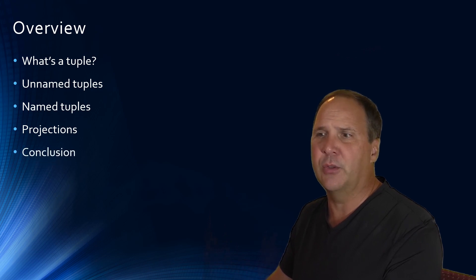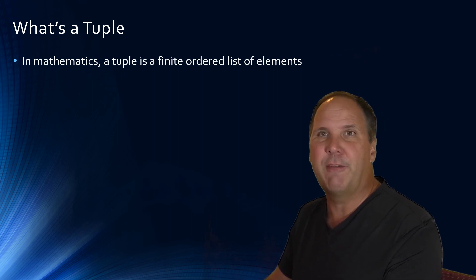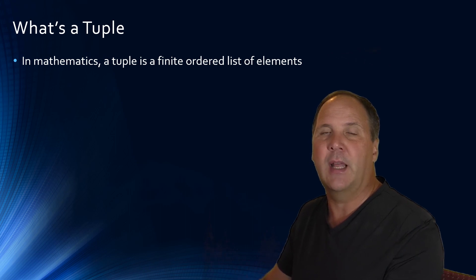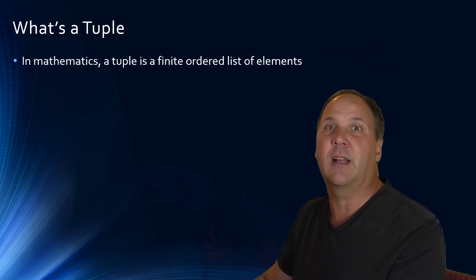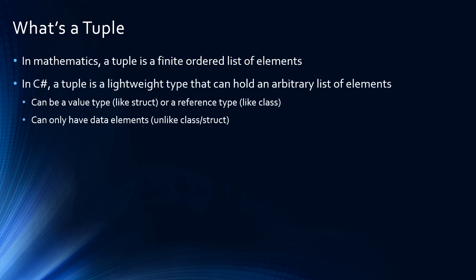So first of all, what is a tuple? Well, in mathematics, according to Wikipedia, a tuple is a finite ordered list of things. In C Sharp, a tuple is a syntactically lightweight type that's really easy to declare, that holds an arbitrary list of elements. So it's like declaring a class or struct, but without having to go to all of the syntax to create that.